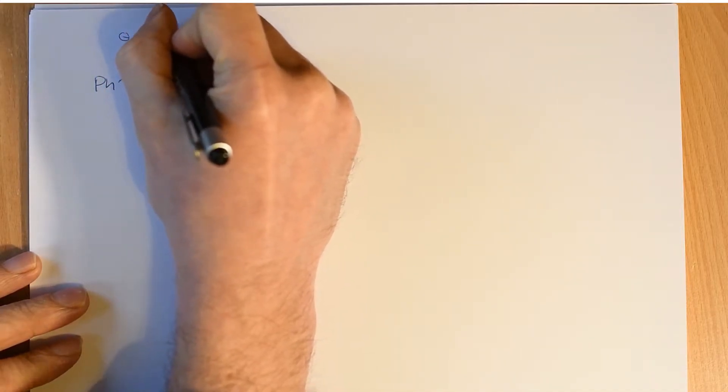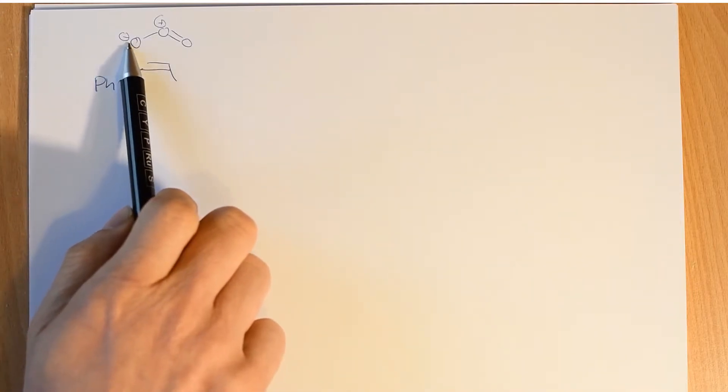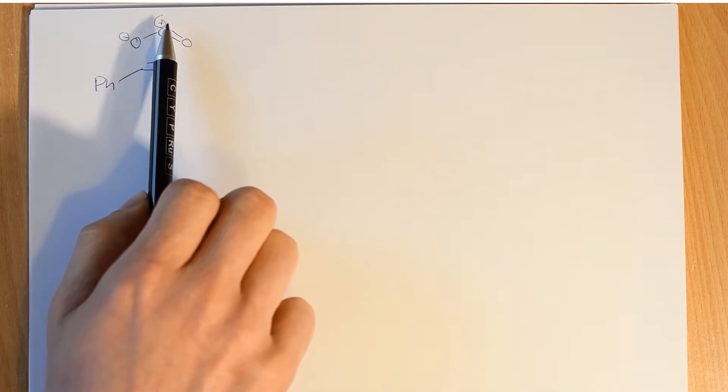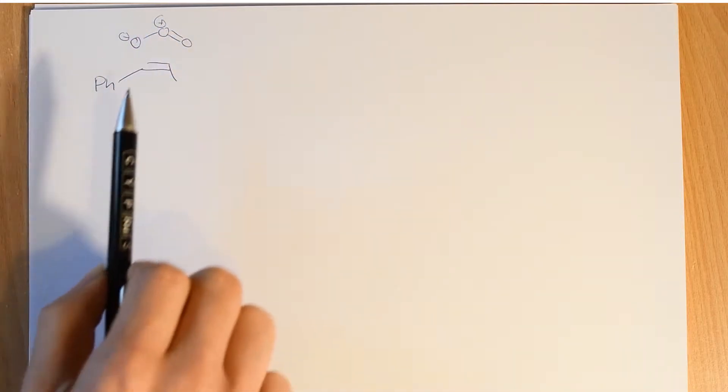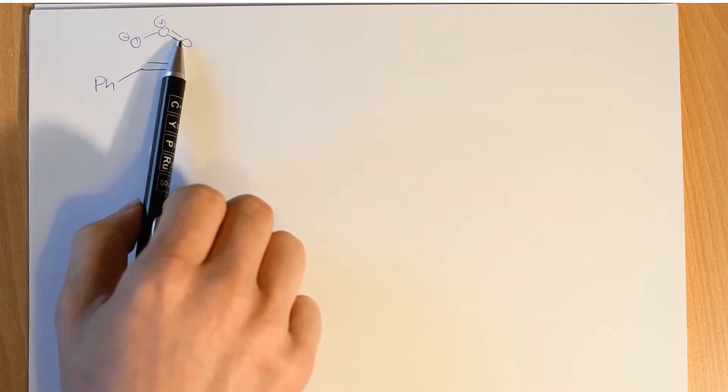And this is ozone. So O3, the same stuff that makes up the ozone layer. Ozone is a very good example of a 1,3 dipole. It's got a negative charge on one end, and it's got an oxygen that's double bonded to another oxygen in the center that's got a formal positive charge on it.